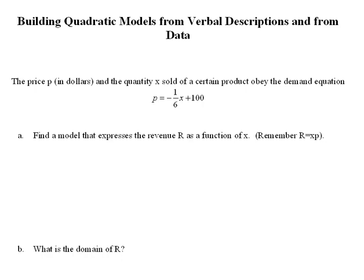For our very first one, it says the price P in dollars and the quantity X sold of a certain product obey the demand equation. And then they've given us this demand equation, P equals negative one-sixth X plus 100.